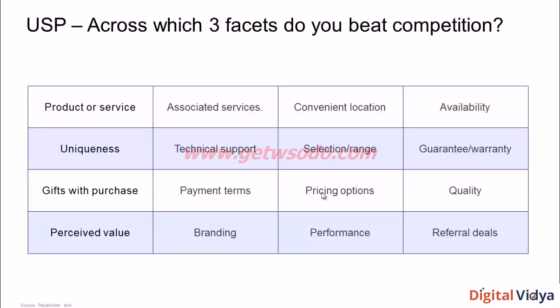That's a range of potential USPs you could pick from. Pick the top three where you see yourself beating your competition and write them down in your notebook. To help you think through this, imagine you are hiring for your company — what would you tell candidates to inspire them to join? What are the key reasons your brand stands out from others in the market? Pause the video for a few minutes, think through which of these are your strongest selling points, write them down, and then come back.